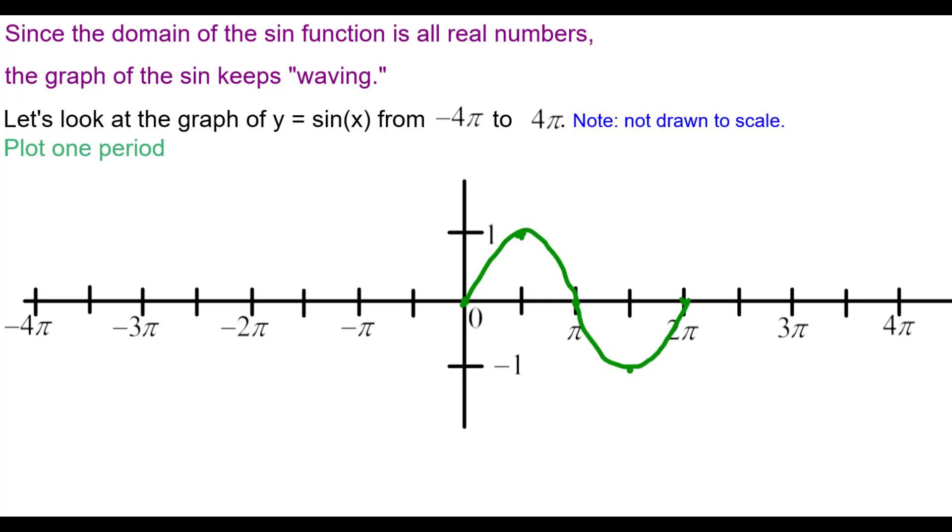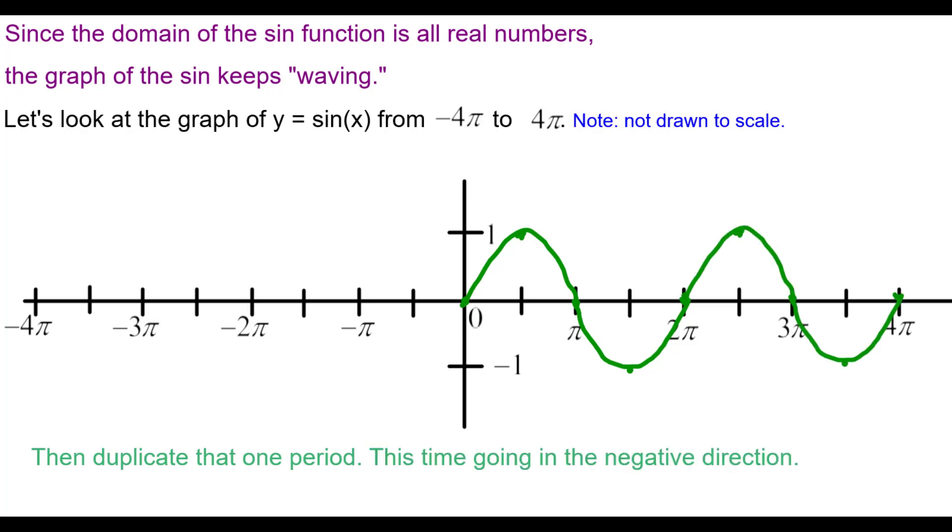So we'll plot one period, one wave from 0 to 2π. We'll duplicate that one period to the right. This time we'll duplicate going in the negative direction, that same wave. And then one more time.